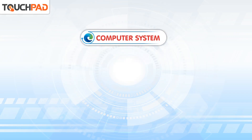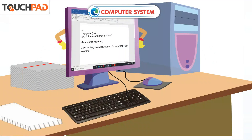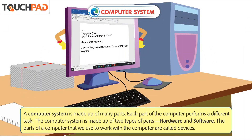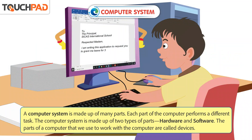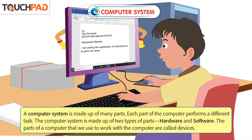Computer System. A computer system is made up of many parts. Each part of the computer performs a different task. The computer system is made up of two types of parts: hardware and software.